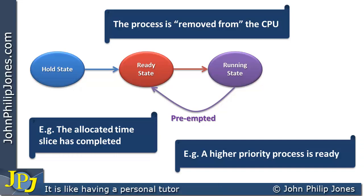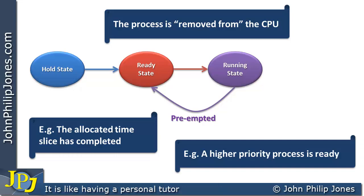Another reason for preemption is that a higher-priority process may arrive in the ready state. Whatever is currently running will have a lower priority, so the operating system will allow it to finish the current machine code instruction and then preempt it — moving it back to the ready state so the higher-priority process can run.